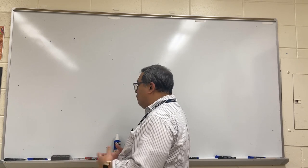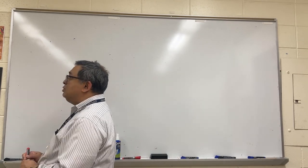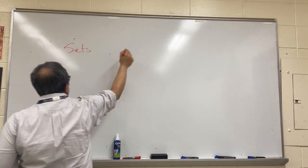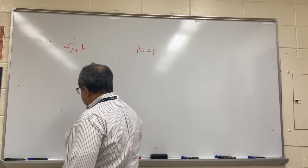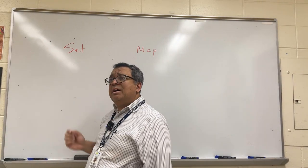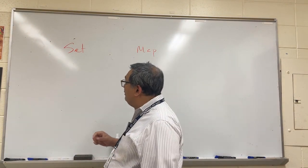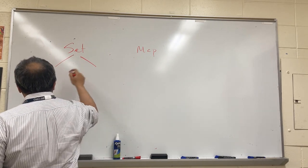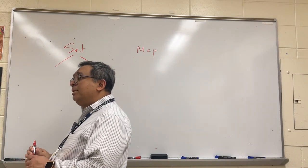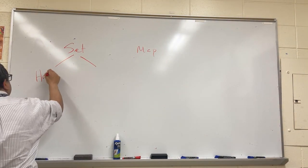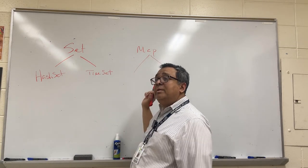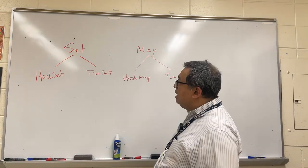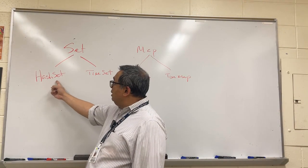We're going to continue our discussion of trees. I wanted to talk first about why we're studying trees. We've studied a couple of other data structures - sets and maps. In Java, these are interfaces. Set has two main branches with specific concrete classes: HashSet and TreeSet. Similarly on the map side, we have HashMap and TreeMap. You can see that the underlying structures use hashing or trees to implement these.